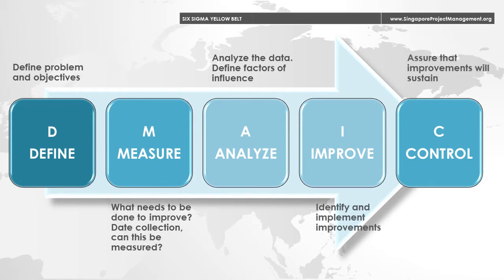DMAIC has five different steps. The first is to define high-level goals and identify the current processes. Next is to measure the key parts of the current process and collect data that is relevant to the project. The next step is to analyze data to confirm cause and effect relationships.